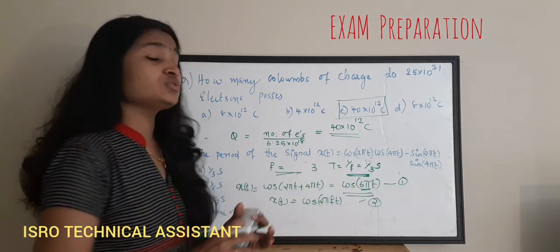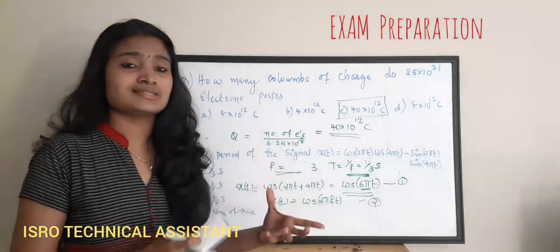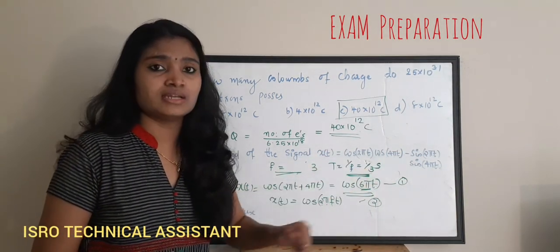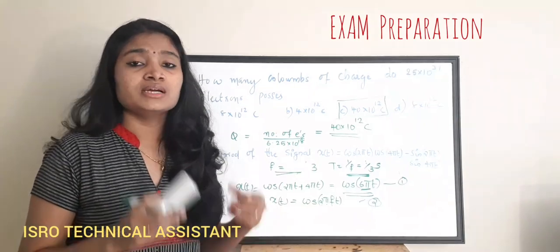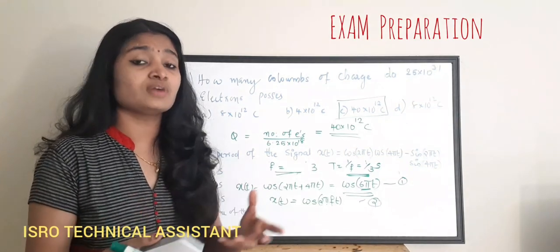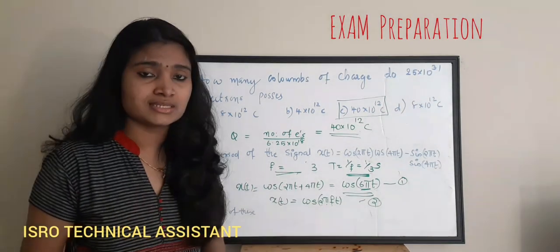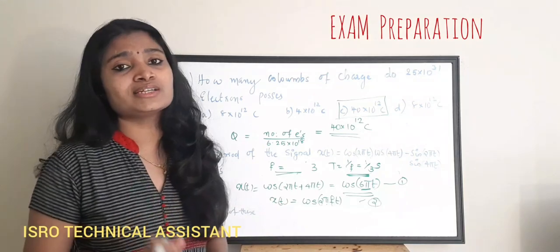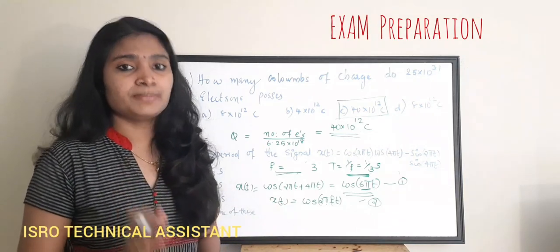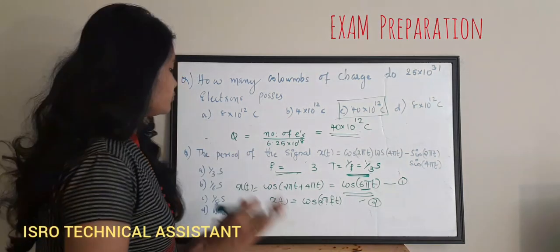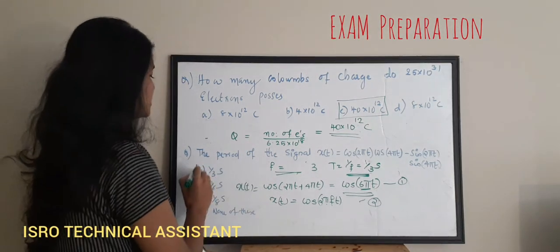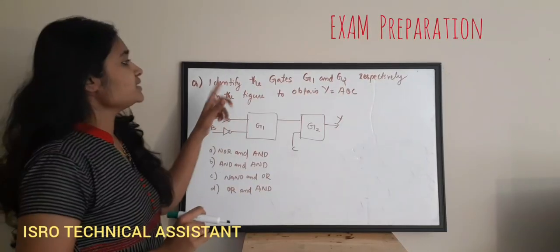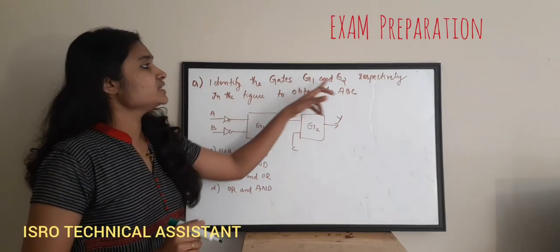To solve such questions, simplify the trigonometric expansion to get a single cosine or sine term. Then find the frequency f and take T = 1/f to get the time period. The correct answer for this question is A: 1/3 seconds.